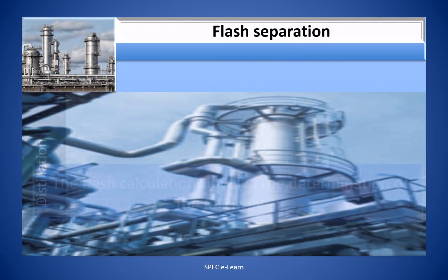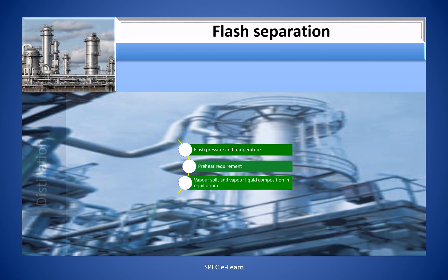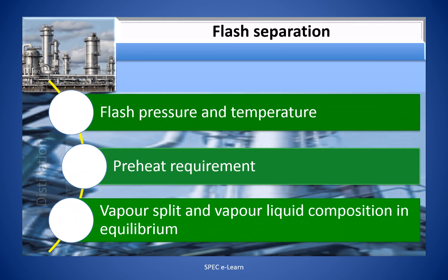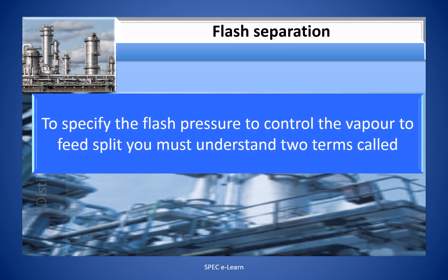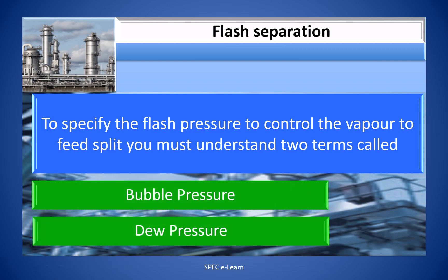The flash calculations involve the determination of the following: flash pressure and temperature, preheat requirement, vapor split, and vapor-liquid composition in equilibrium. To specify the flash pressure to control the vapor-to-feed split, you must understand two terms called bubble pressure and dew pressure.